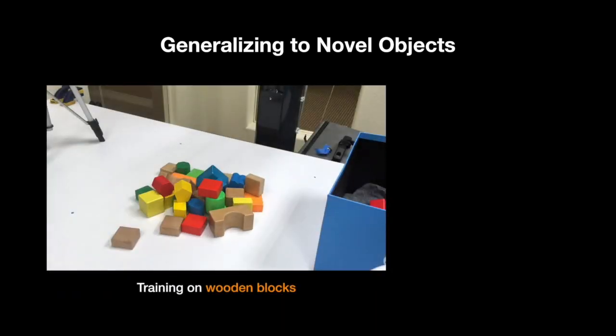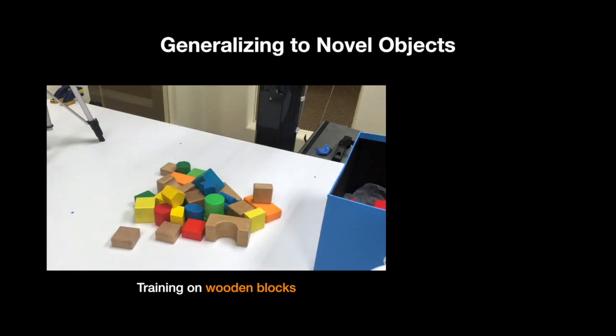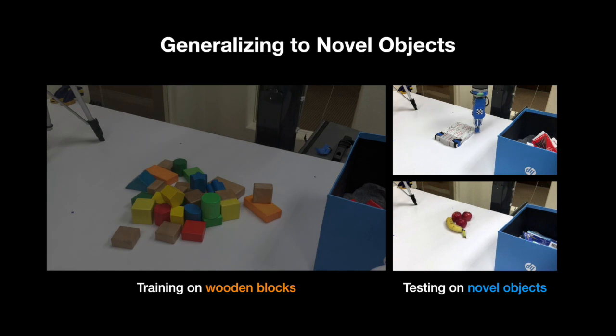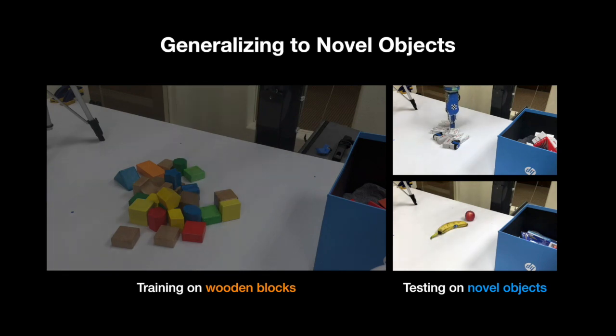Generalizing to novel objects is also important for picking in unstructured scenarios. Here, we show that while our policies have only been trained on wooden blocks through trial and error, they are also capable of generalizing to new objects with textures and shapes that have never been seen before during training. For example, on tightly arranged random office objects as well as fruit.